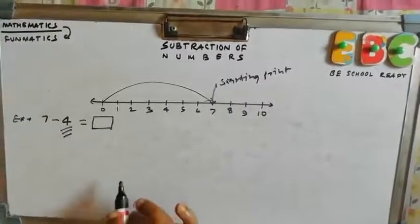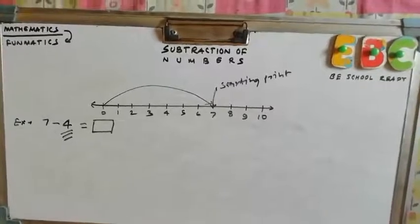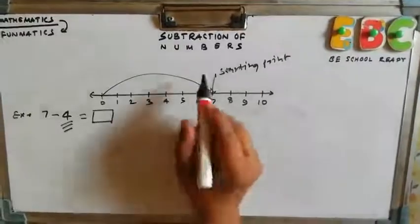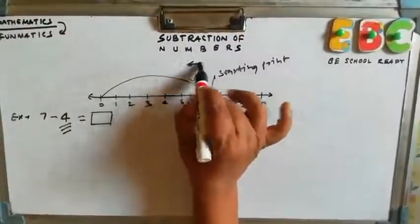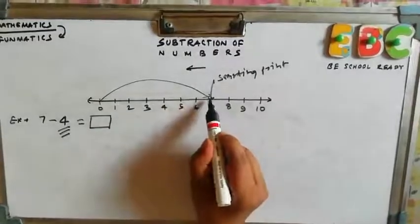Now what we have to do is take a jump of 4. But remember subtraction is the reverse process of addition. So in this case we will take jump in which direction? Reverse direction. Right. So we take a jump from here.